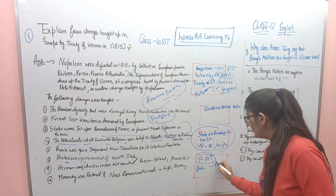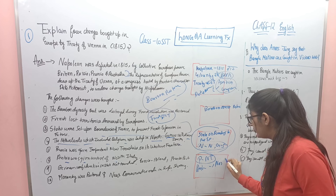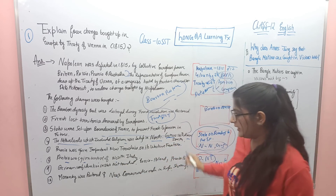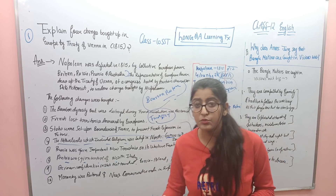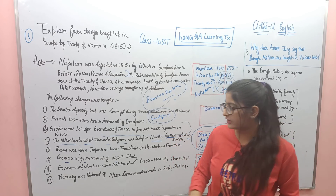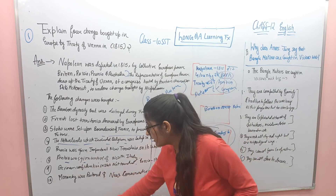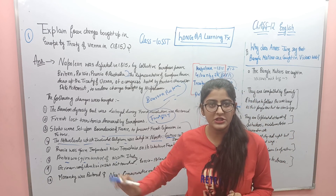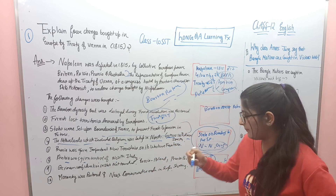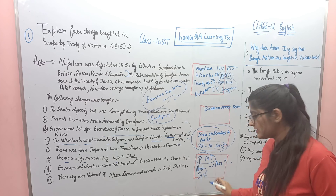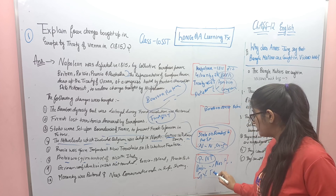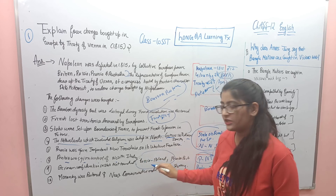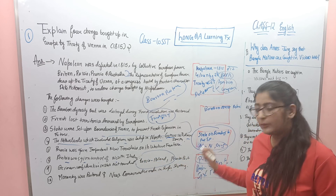Next point — Austria was given control of north Italy. Keyword: 'Austria north Italy.' Moving on, German confederations were not touched — Germans ki kisi bhi cheez ko touch nahi kiya gaya. Keyword: 'G cross' — Germans ko touch nahi kiya gaya.